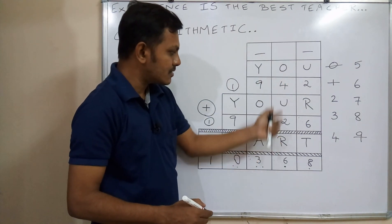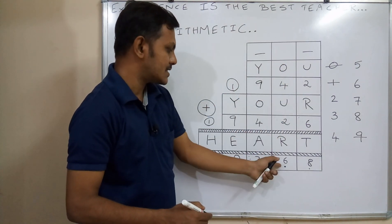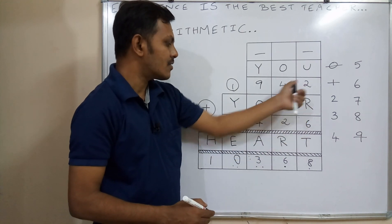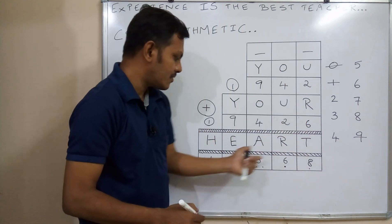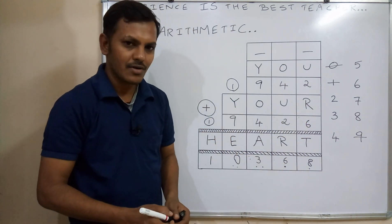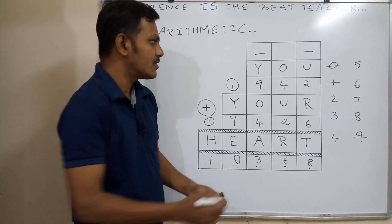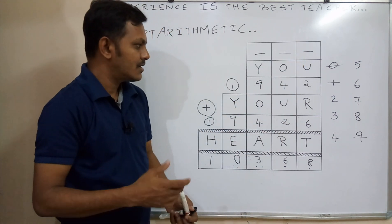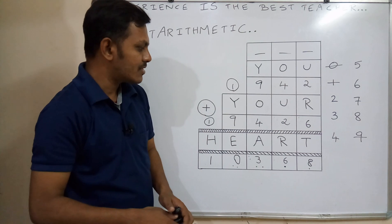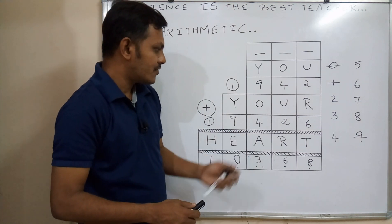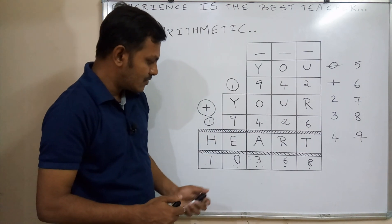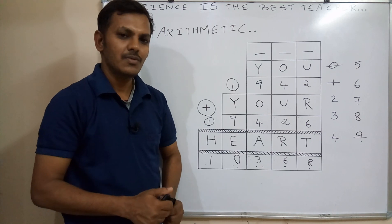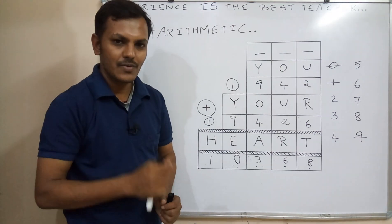Therefore the correct possibility is O=4, U=2 without carry-over, giving R=6. The final answer is: 942 plus 9426 equals 10368. This problem uses the trial and error method. We checked 2 and 3, then 3 and 2, then 2 and 4 — none satisfied the rules — so writing 4 and 2 gives the correct answer. Thank you.